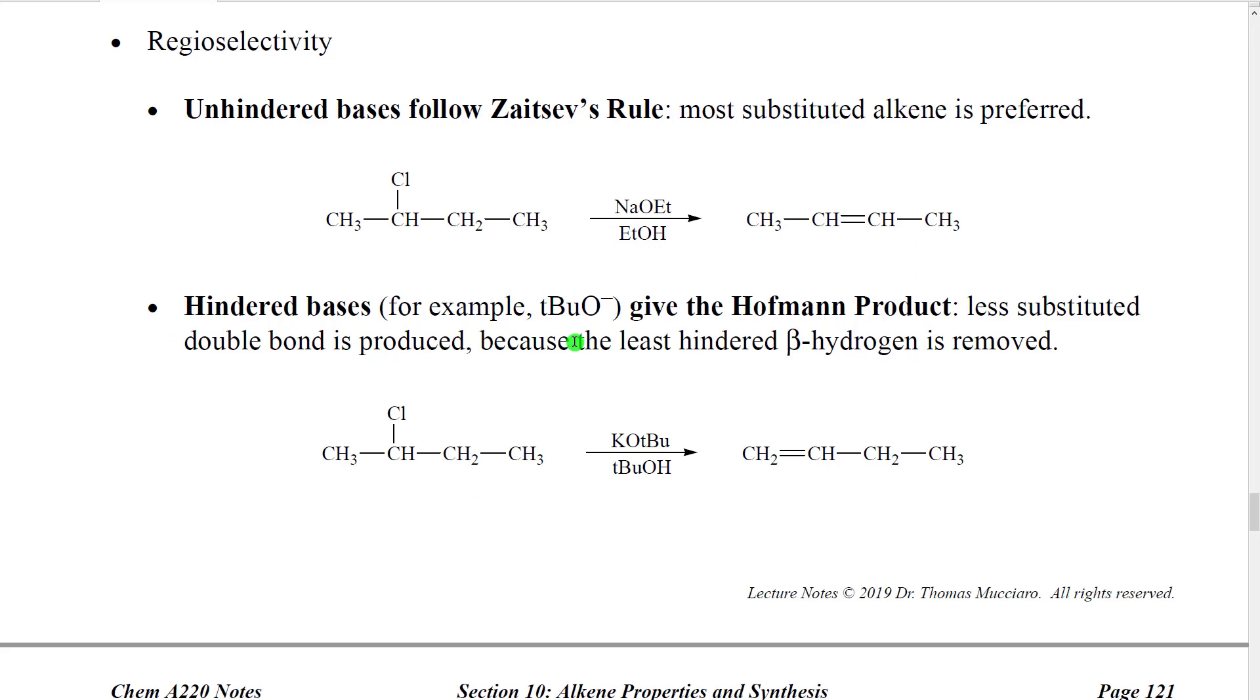In contrast, we can use a different base such as t-butyl oxide, which is sterically hindered because it has such a large carbon group directly next to the oxygen. Sterically hindered bases are going to prefer to remove the hydrogen from the less substituted beta because they're more accessible. Therefore, if we remove a hydrogen from the less substituted beta, we would get a double bond in a different location from the first reaction, and we call this the Hofmann product. We only get the Hofmann product generally when we have a sterically hindered base.